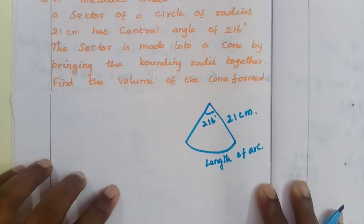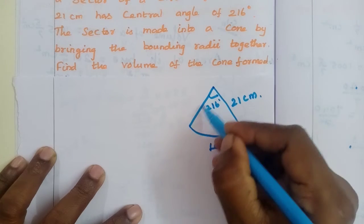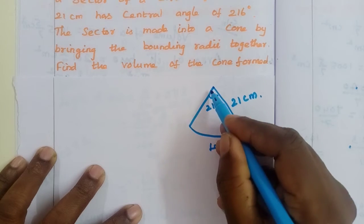The length of arc is cone form and then the edge is joined and then the cone shape is made.